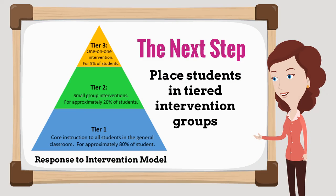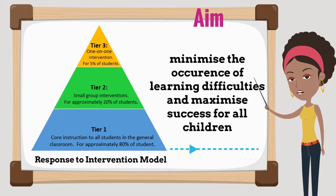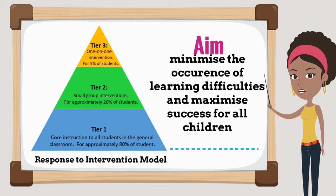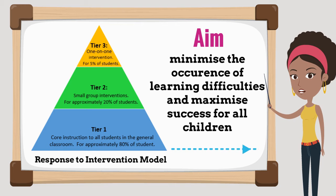The next step in RTI is to place students in tiered intervention groups based on their screening scores. Tier 1 involves high quality, differentiated teaching to all students. The aim is to minimise the occurrence of learning difficulties and maximise success for all children.